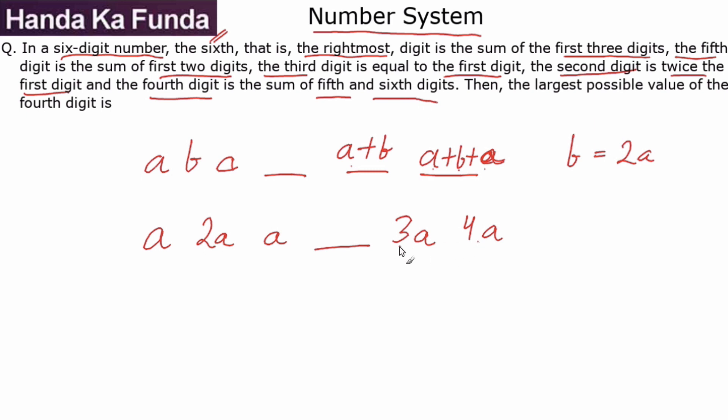Which means the fourth digit is 3A plus 4A, or 7A. So my digits in the six-digit number are A, 2A, A, 7A is the fourth digit, then 3A and then 4A.